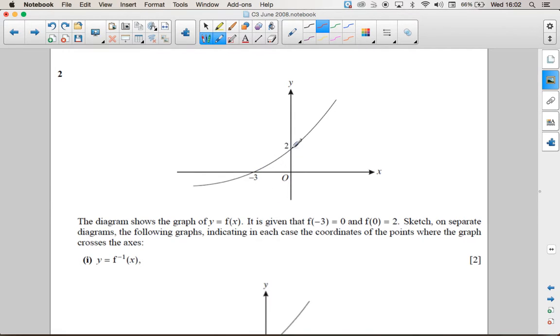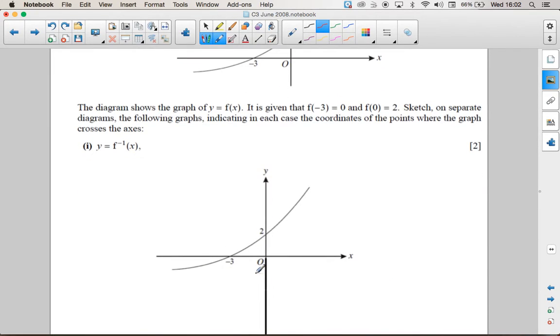It's told us that this point is minus 3, this point is 2, and it wants us to sketch, firstly, the inverse function.